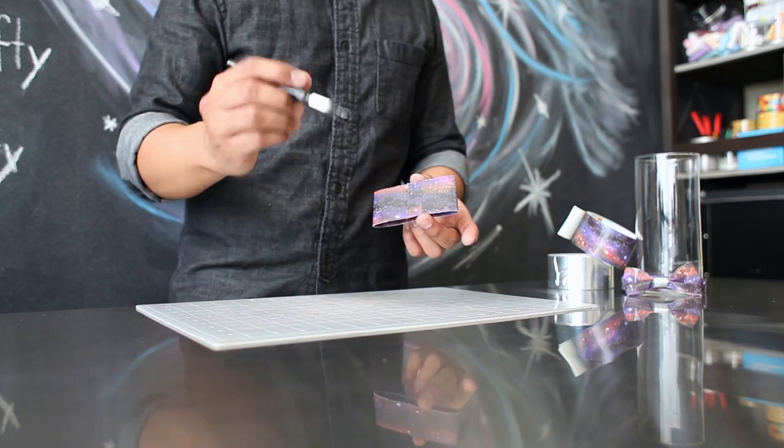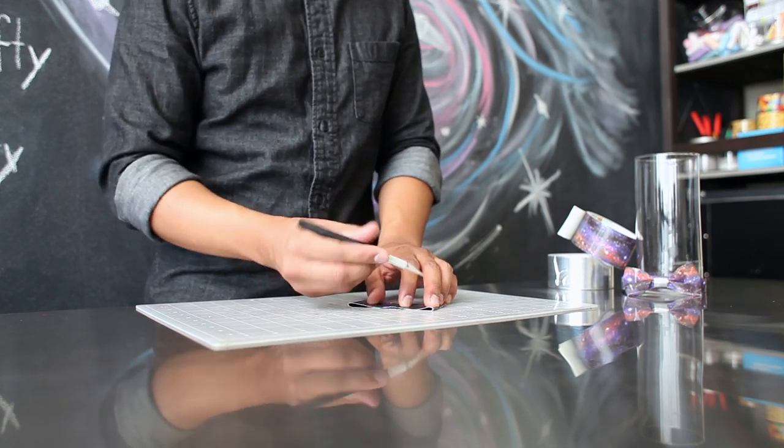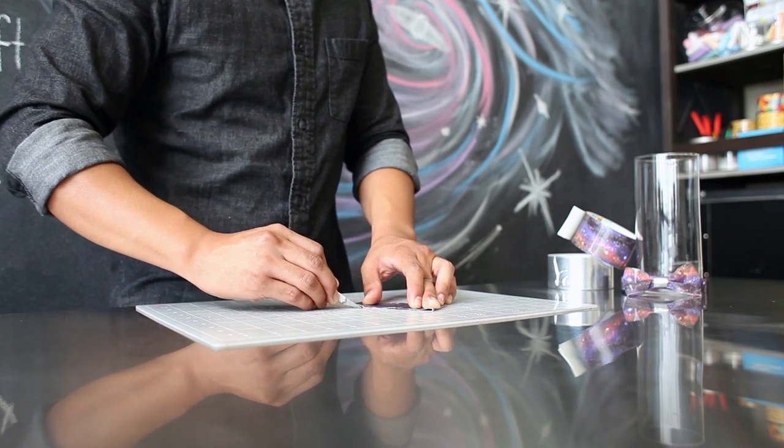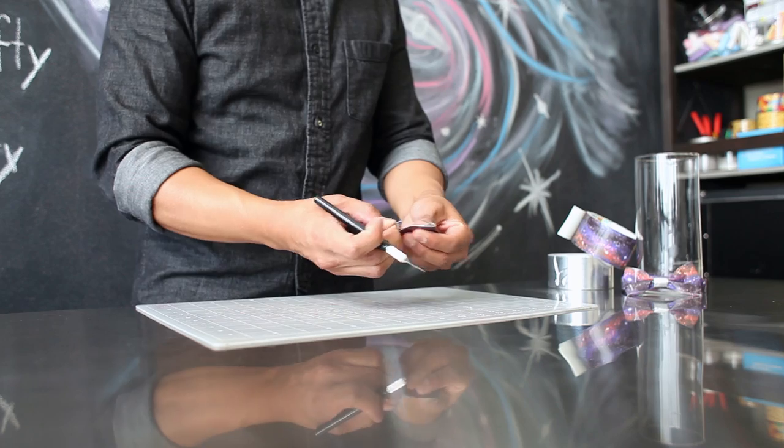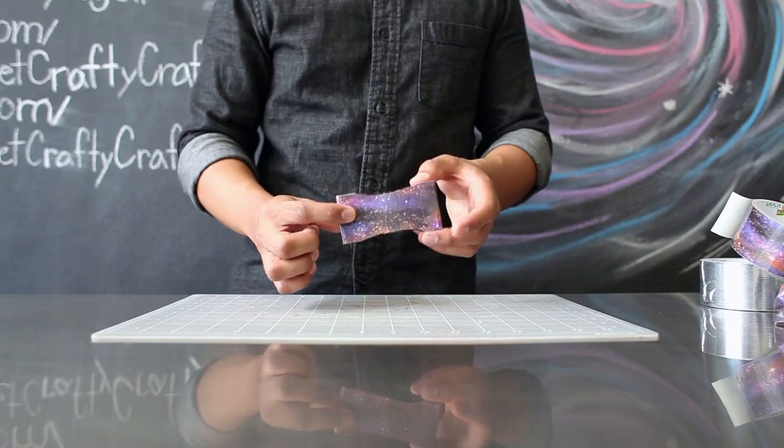To shape your bowtie you're going to use your exacto blade to cut a curve on the edge of your bowtie. Carefully cut the edge and repeat it on both sides. After you've curved the edges of your bowtie, set this piece aside.